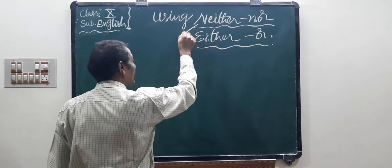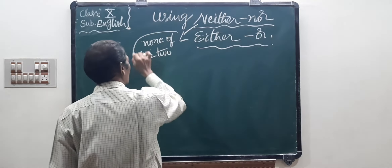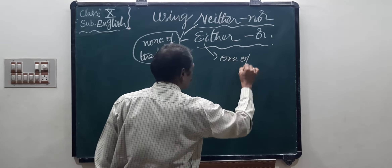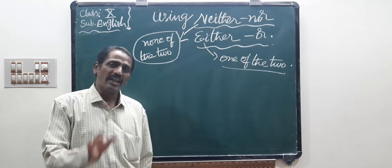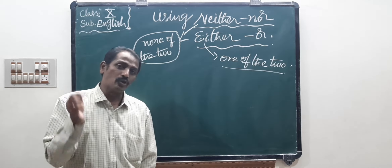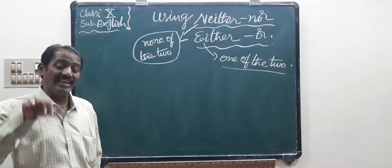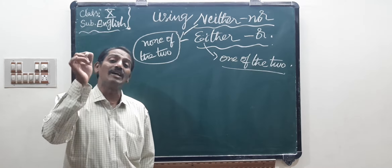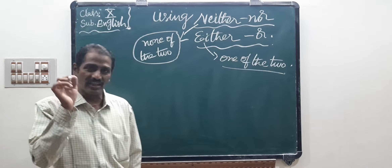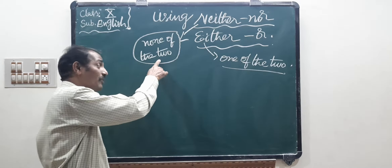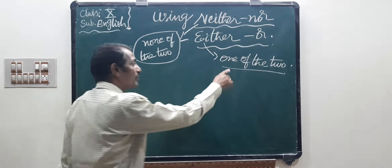Neither/nor means 'none of the two.' Either/or means 'one of the two.' Neither/nor is used in a negative sense. When we are using neither or either, we should write only singular helping words — is, was, has — because it refers to singular. Either/or is used in a positive sentence, meaning one of the two is possible.